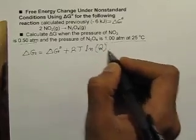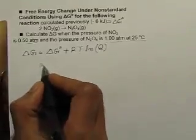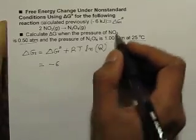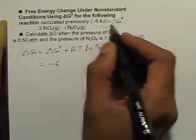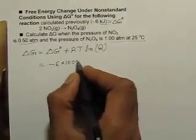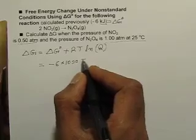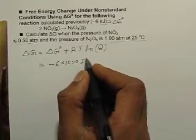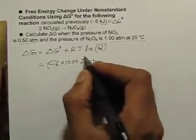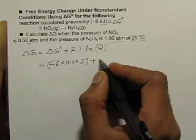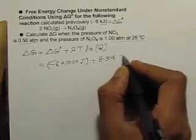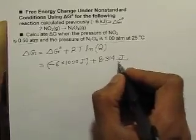Delta G° is given here which is minus 6 kilojoules. It's kilojoules, so we have to convert into joules. We have to multiply by 1000, then it will be in joules. Then plus R which is the gas constant, and its value we will use here is 8.314 joules per Kelvin mole.